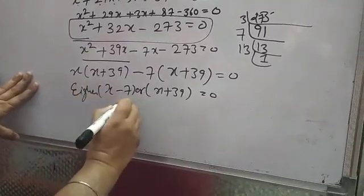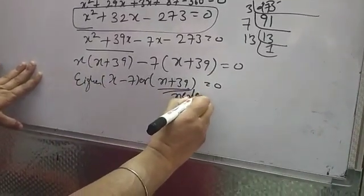So age cannot be negative. So we'll neglect this. Because this gives X value as minus 39.